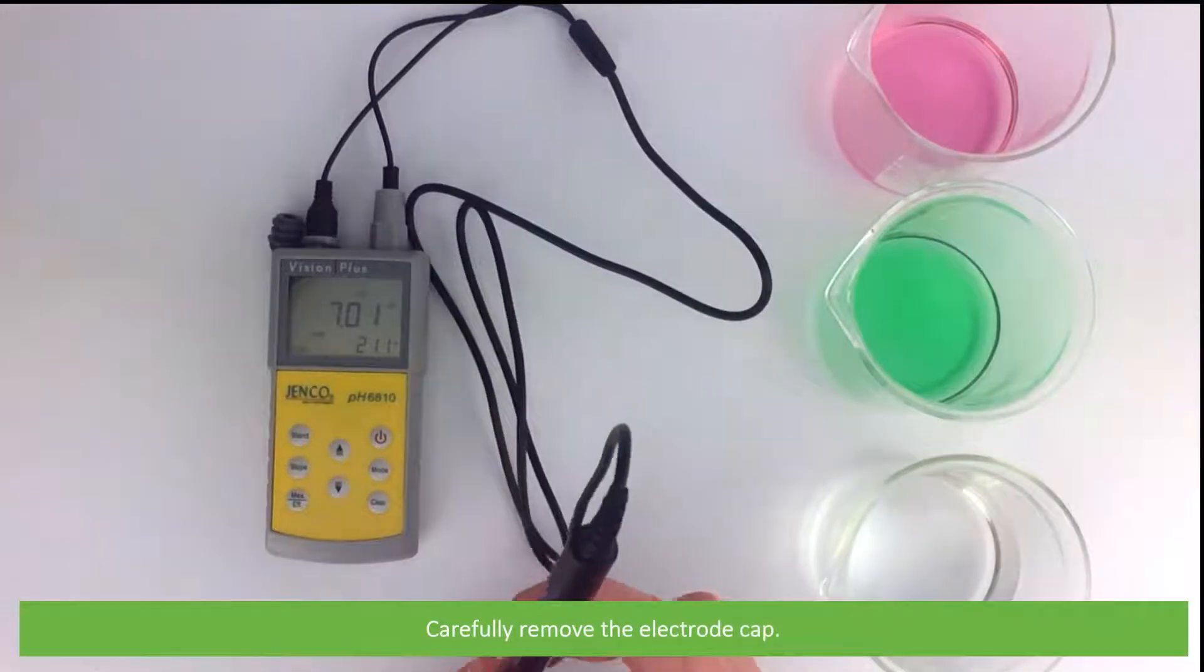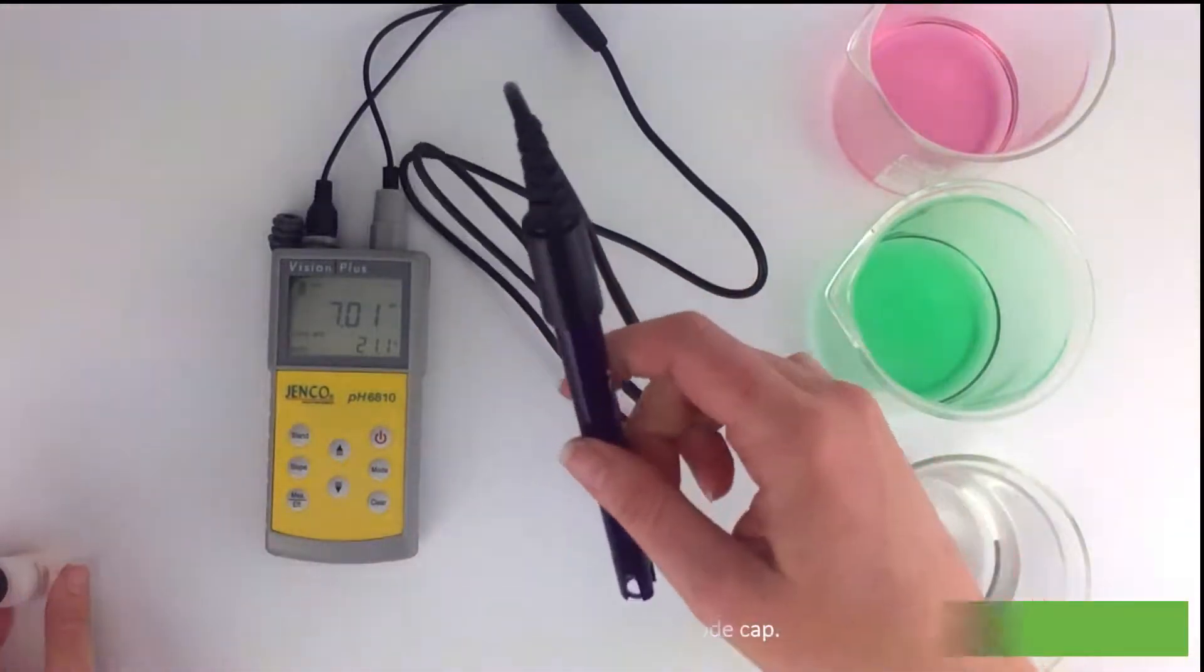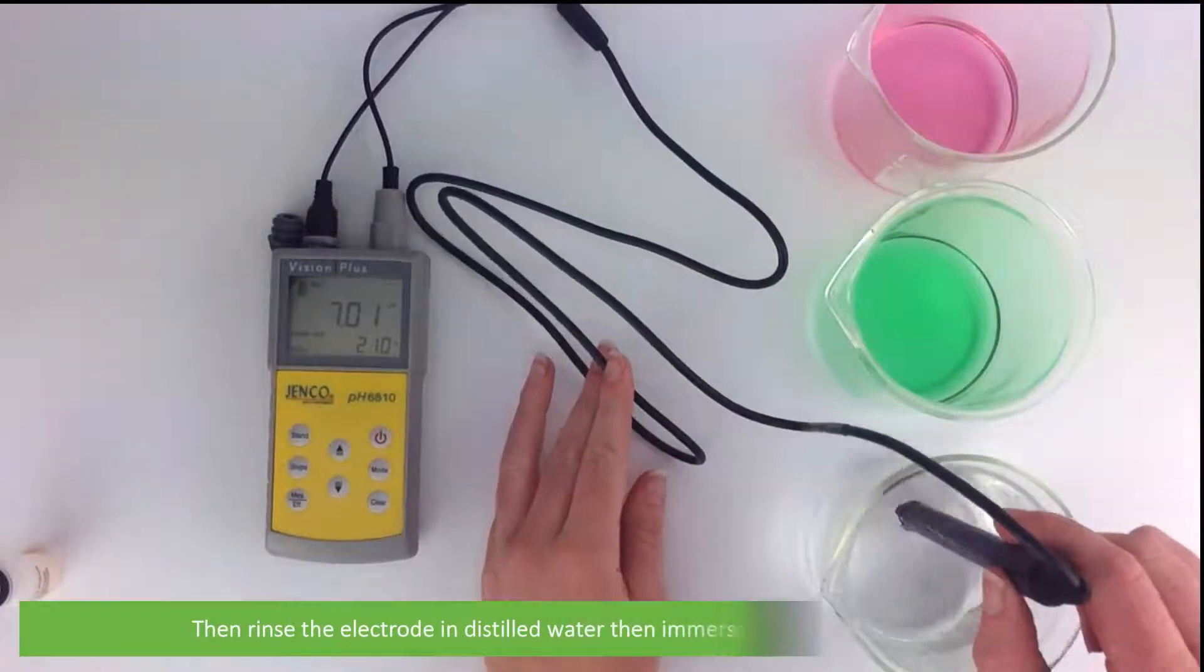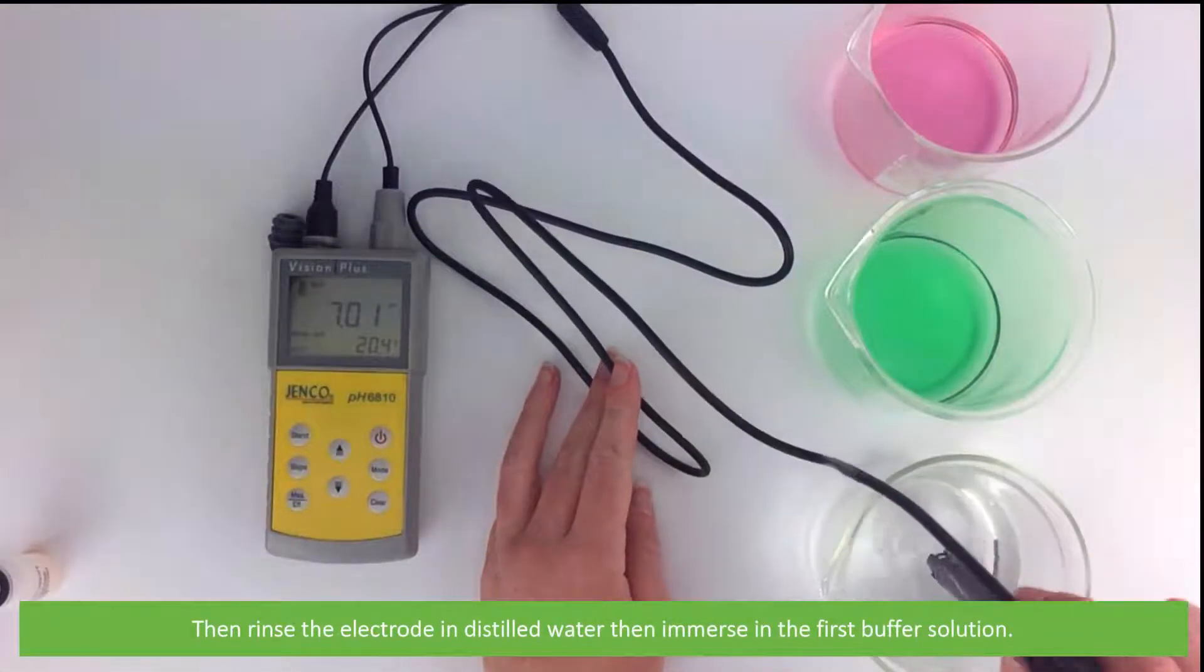You can now carefully remove the electrode cap. Rinse the electrode in distilled water and then immerse it in the first buffer solution.